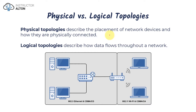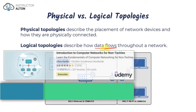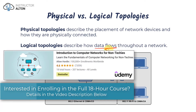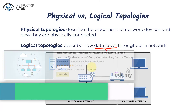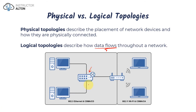On the flip side, the logical topology deals with the actual data and how it flows. This is a bit more complex because different devices — like a switch and a wireless access point (WAP) — have different protocols that tell them how things are supposed to flow. And when I say things, I'm talking about the data.